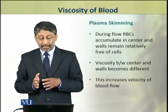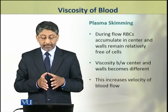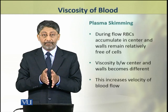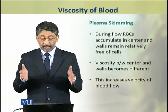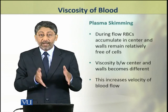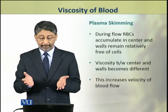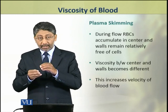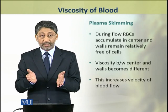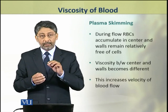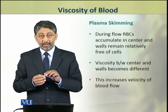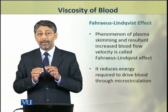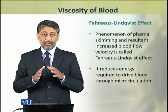In the process of plasma skimming, red blood cells flow and concentrate in the center of the vessels, while the periphery becomes relatively free of cells. This creates a difference in viscosity between the center and the periphery of the vessel.